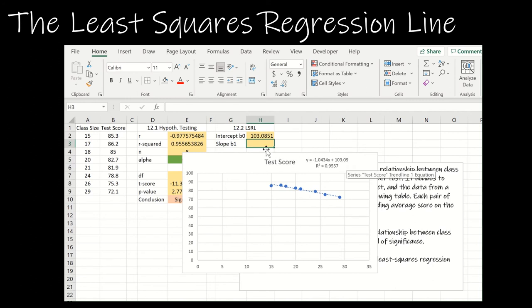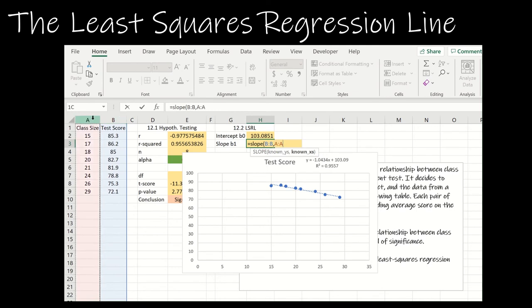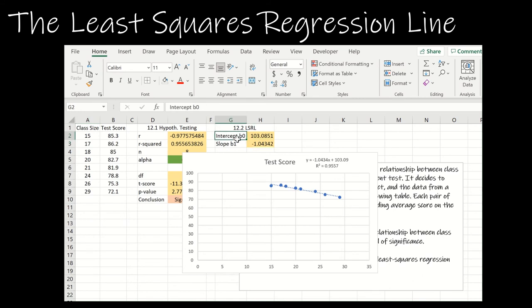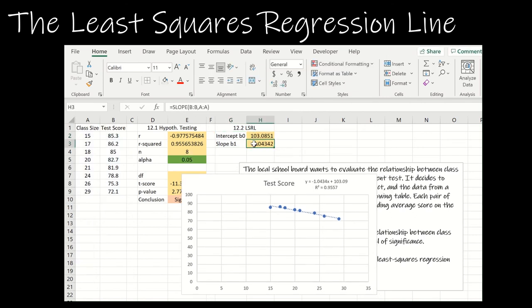The slope is slope – known Y's comma known X's. Notice I get the exact same value. So the reason I would take the time to go ahead and find these is because now I can actually set up an equation using those two values that I have calculated.